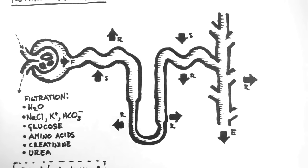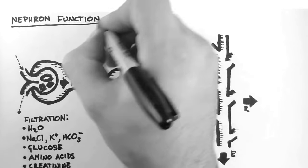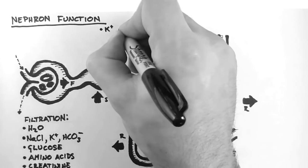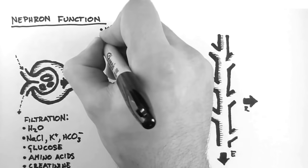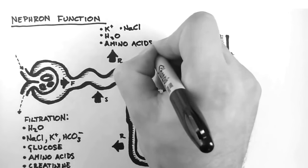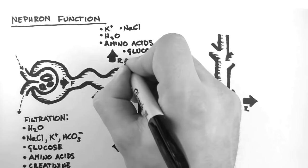Now let's look at what happens in the proximal convoluted tubule. Here we get reabsorption of potassium, sodium chloride, water, amino acids, glucose and bicarbonate.